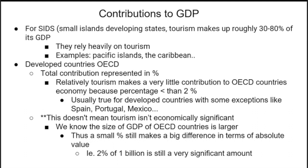For developed countries, the total contribution of tourism is represented as a percentage and is relatively small — less than 2% of OECD countries' economies. But 2% of a very large GDP is still a very significant amount. This is true for most developed countries, with exceptions like Spain, Portugal, and Mexico, where tourism is still a very predominant contribution to the economy.